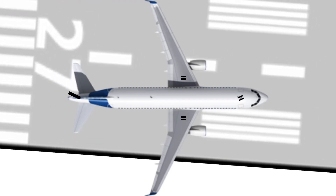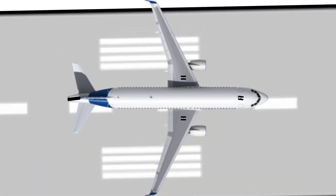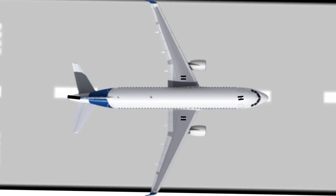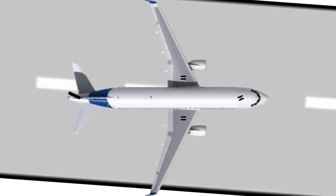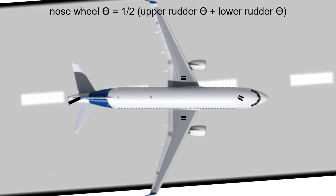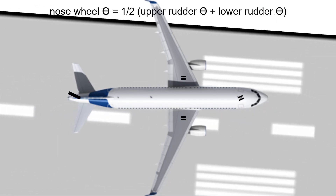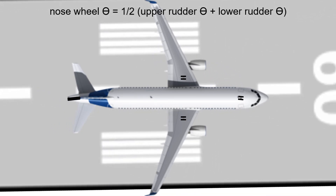Whether taking off or landing on the ground, the nose wheel's angular position depends on the overall displacement of the upper and lower rudders.